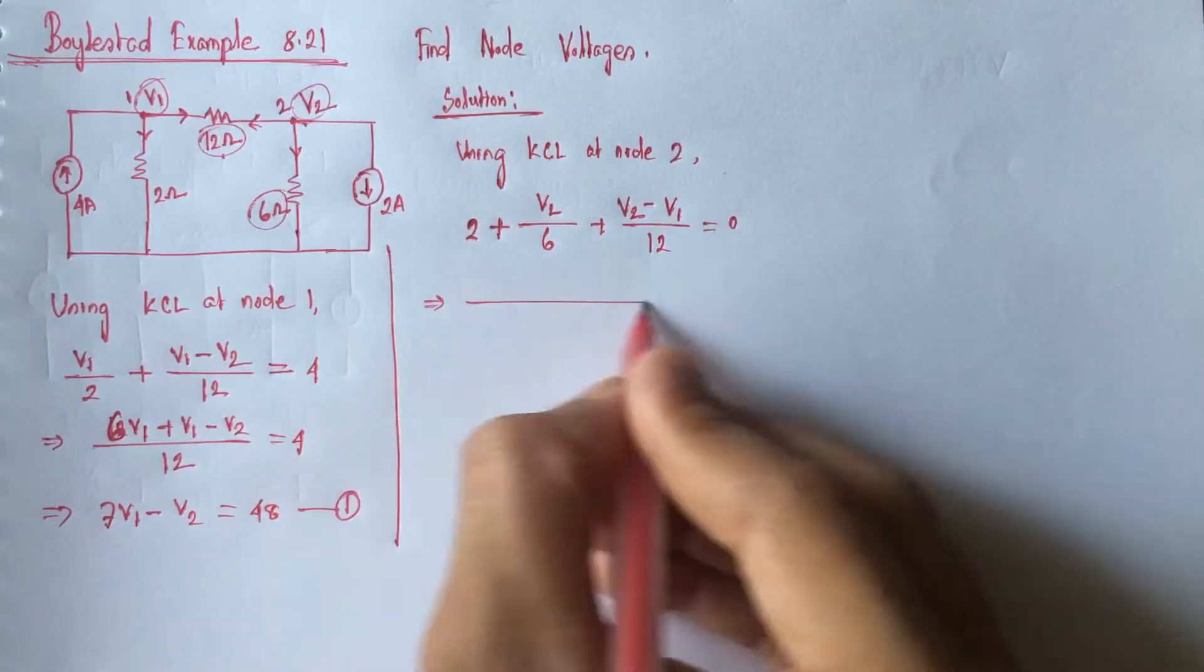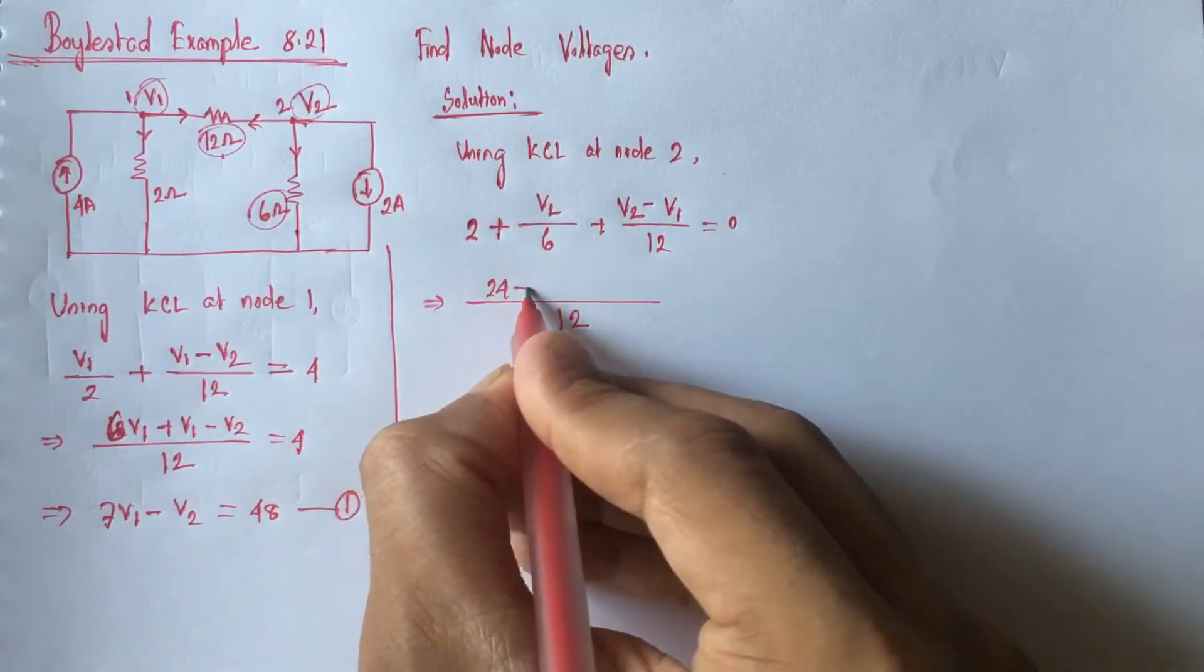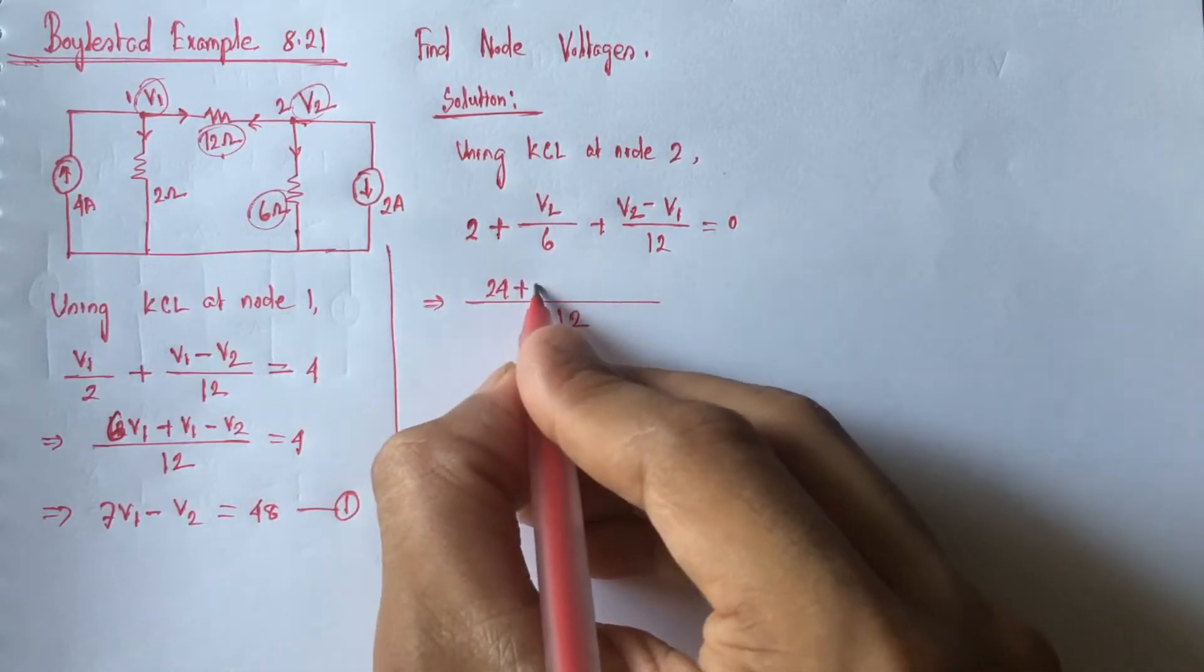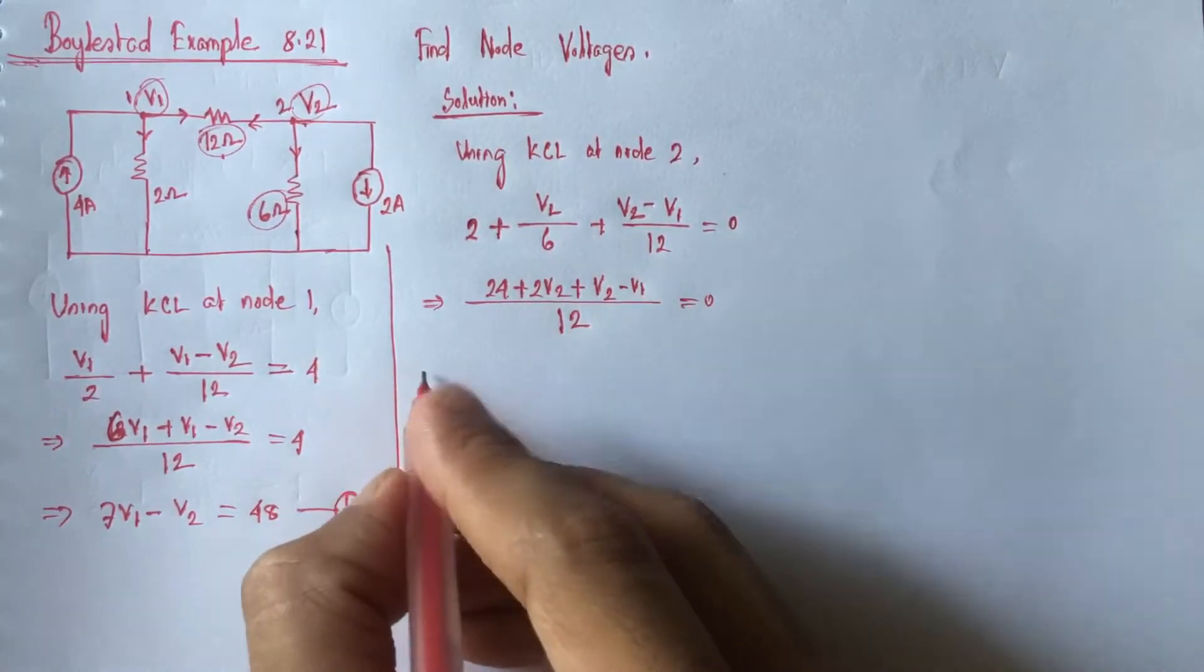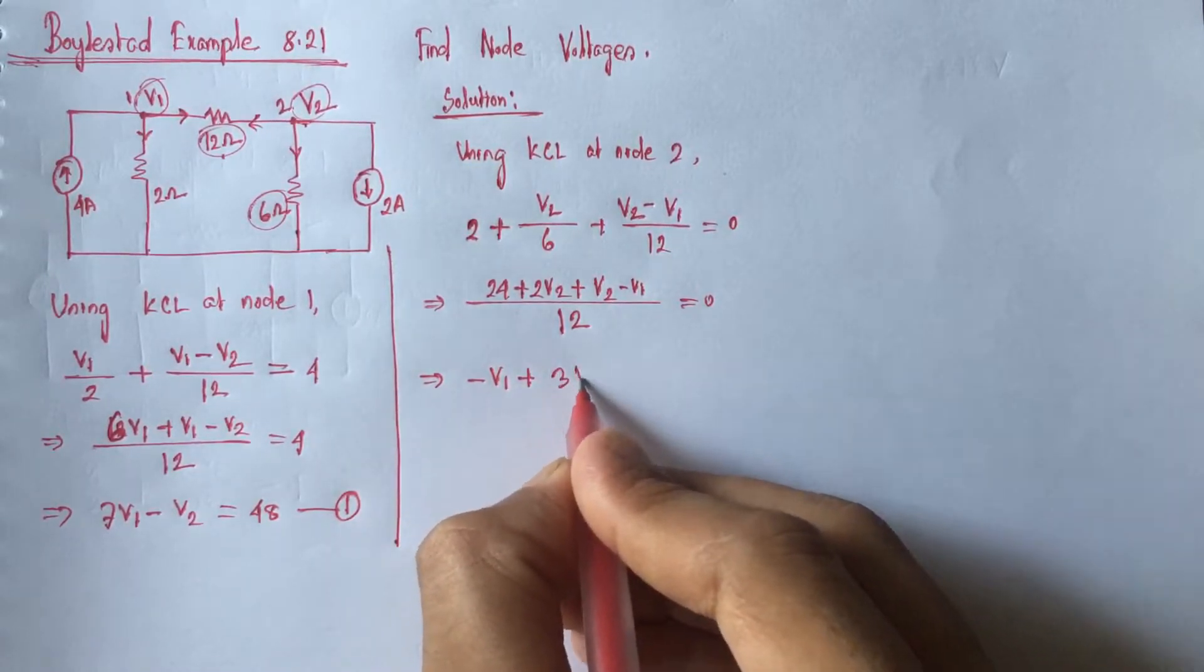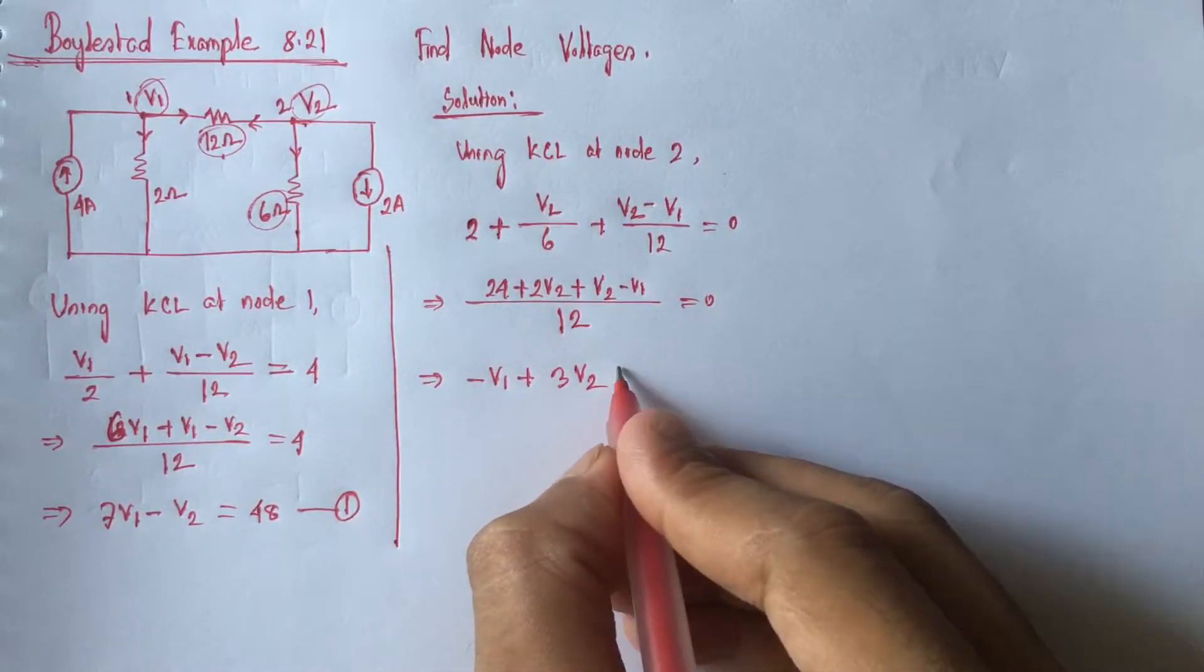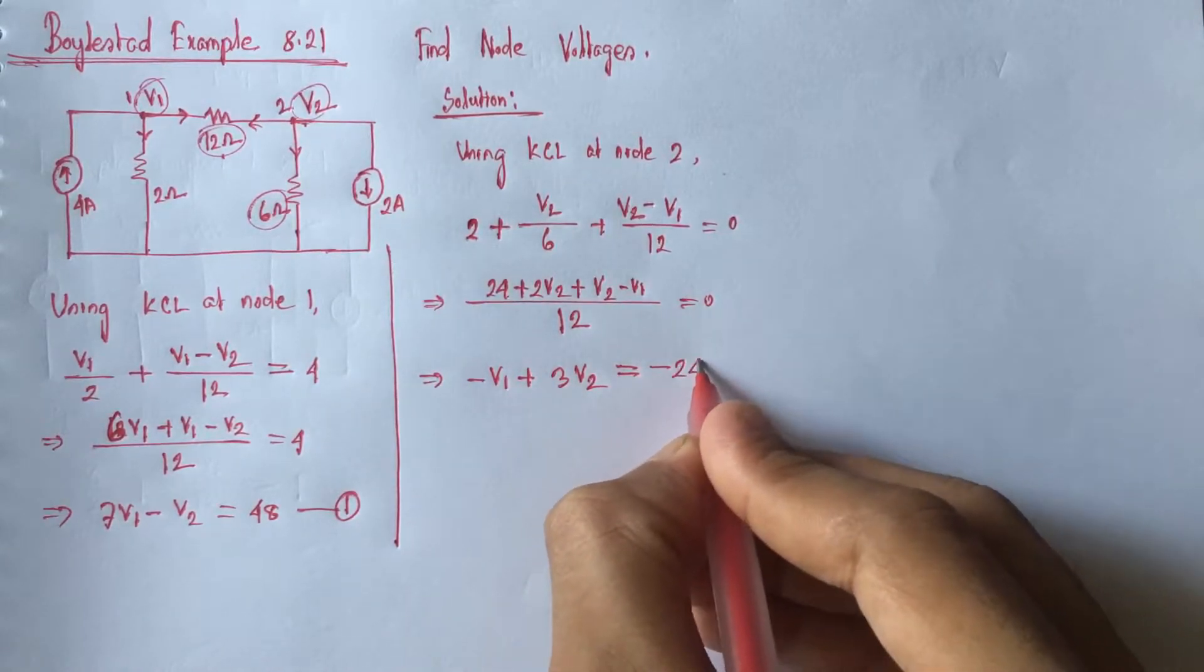Now, simplifying the equation 12: 24 plus 2V2 plus V2 minus V1 equals 0, so minus V1 plus 3V2 equals minus 24.